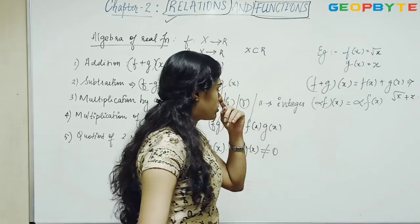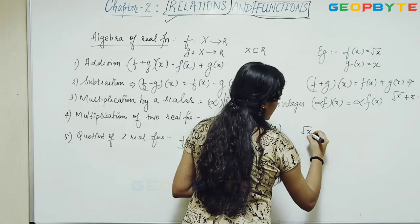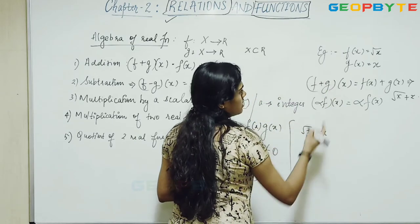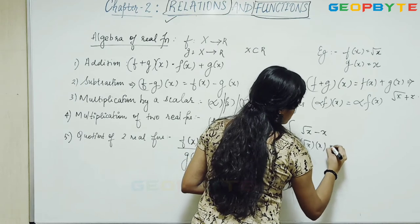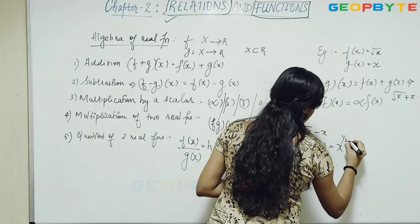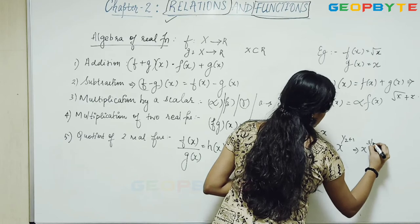Similarly, for subtraction, it would be root x minus x. And for multiplication, it will be root x into x, which can be written as x raised to 3 by 2.